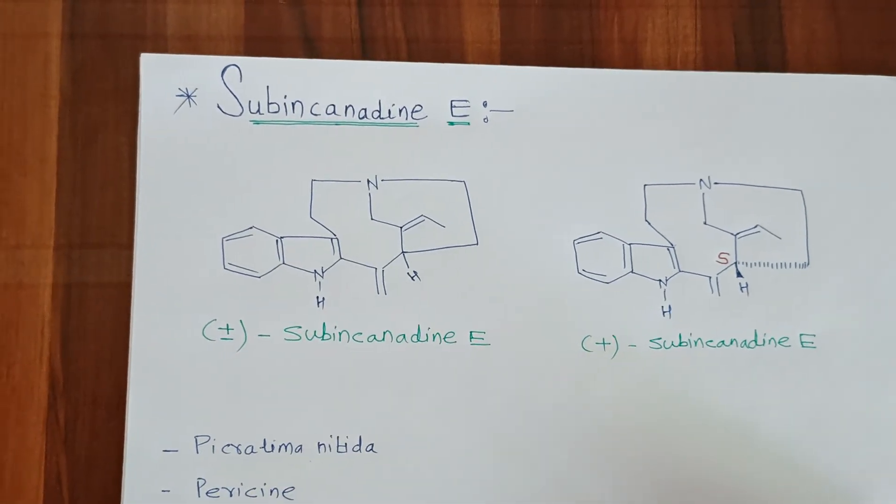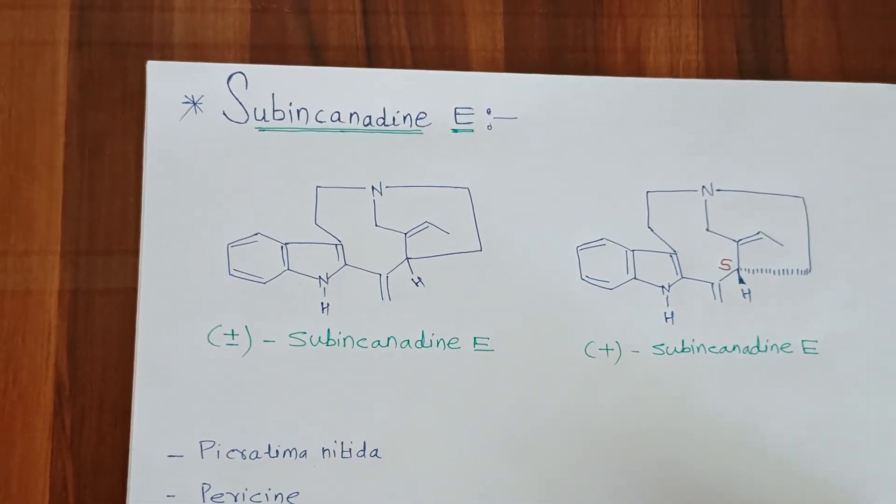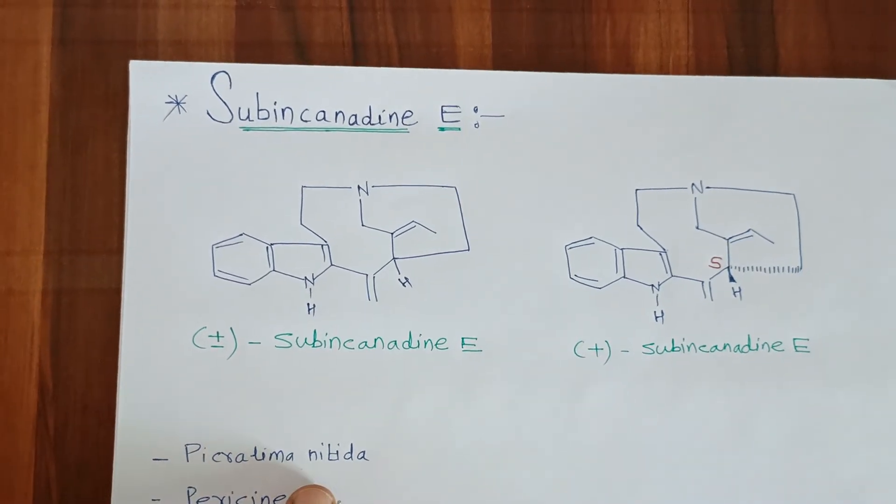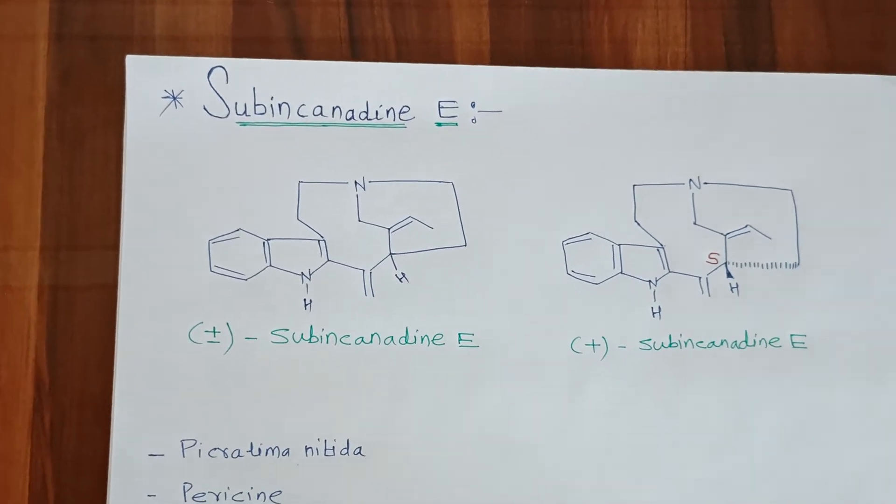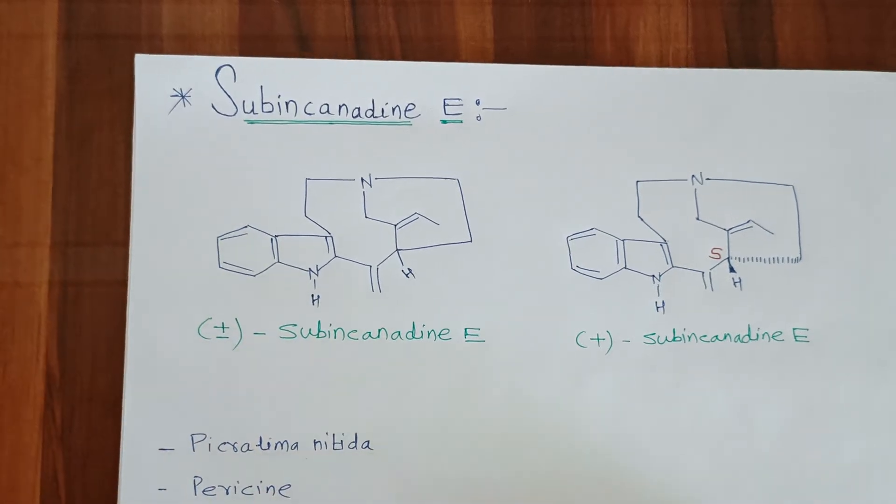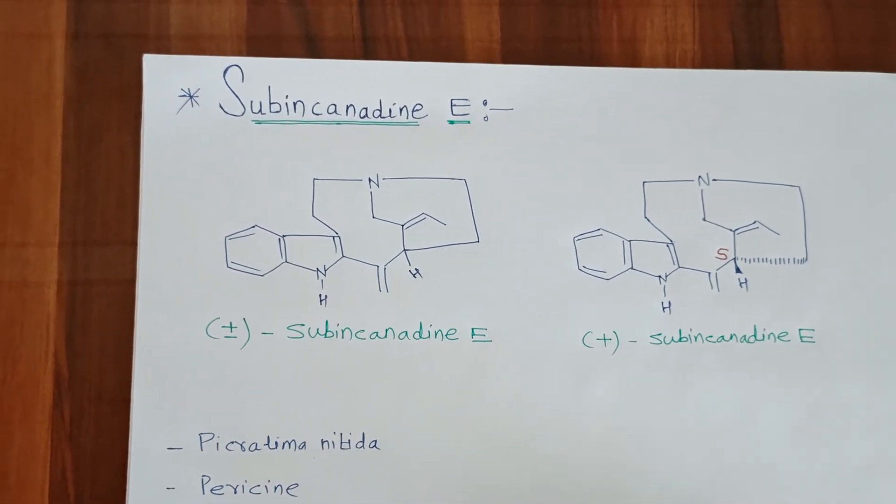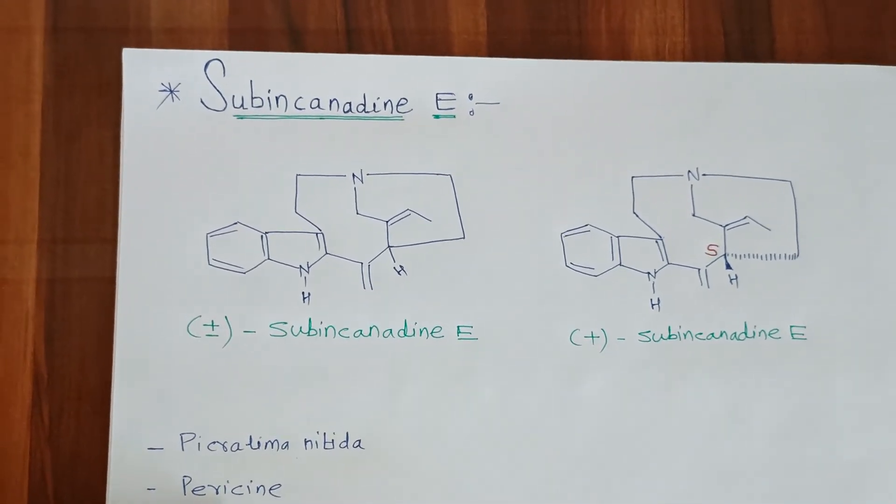Subincanadine E was initially isolated from Picralima nitida by Stocking and co-workers in 1982. It is also called Pericine.